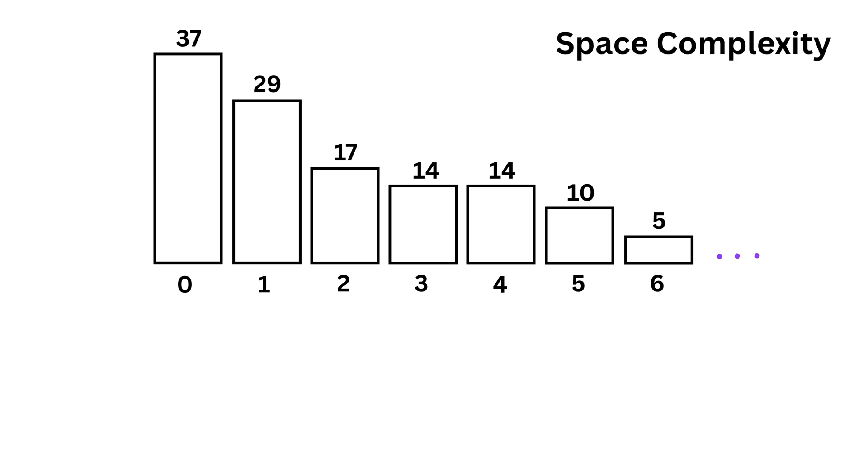Space complexity means how much extra memory it uses. In insertion sort, we don't use any new list or structure, we just use one temporary variable to hold values during shifting. So, the space complexity is 1, also called constant.